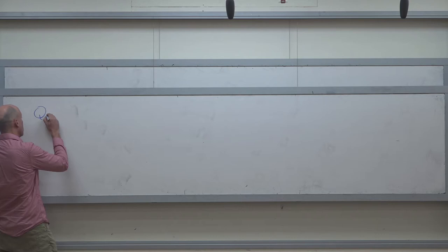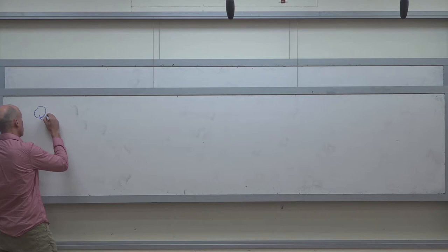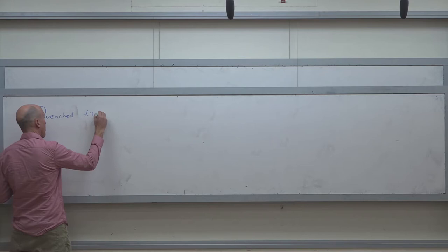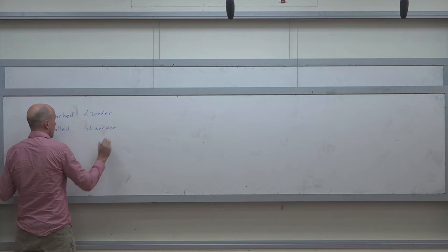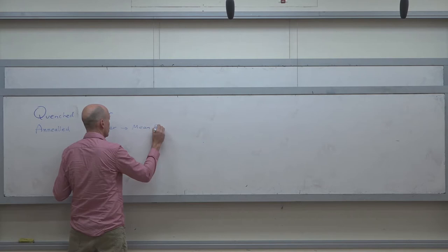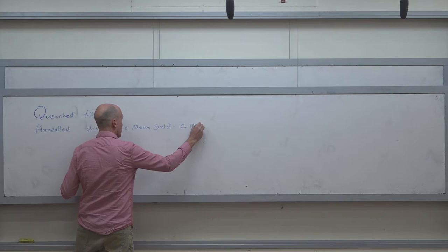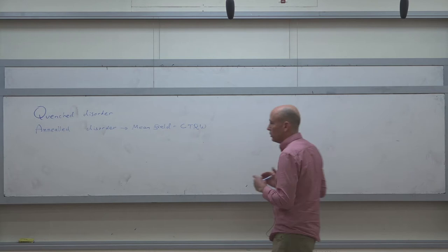Before doing the more mathematical aspects, I want to discuss the fundamental difference between quenched disorder and annealed disorder. This distinction is also related to what we call the mean field approximation, which corresponds to what we previously called the continuous time random walk.